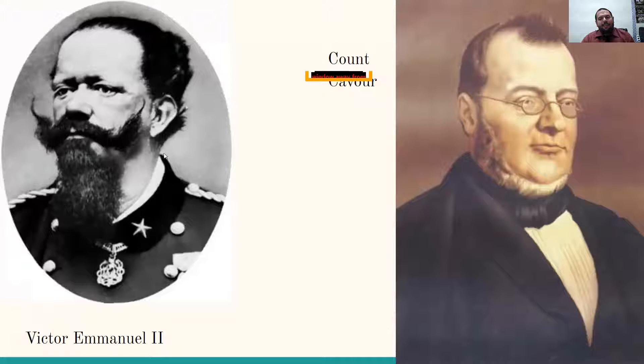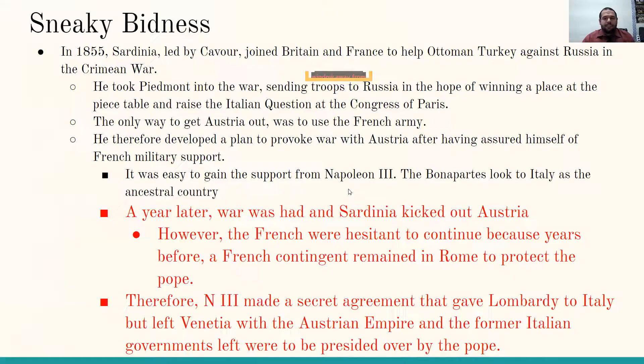When in office, Cavour set out to reform Sardinia's economy. He improved agriculture, built railroads, and encouraged commerce by supporting free trade. His long-term goals — and this is a test question — were to end Austrian power in Italy and annex the provinces of Lombardy and Venetia, the three northern states in the fragments of Italy. Here's Victor Emmanuel with that mustache, and Count Cavour with the chin beard.